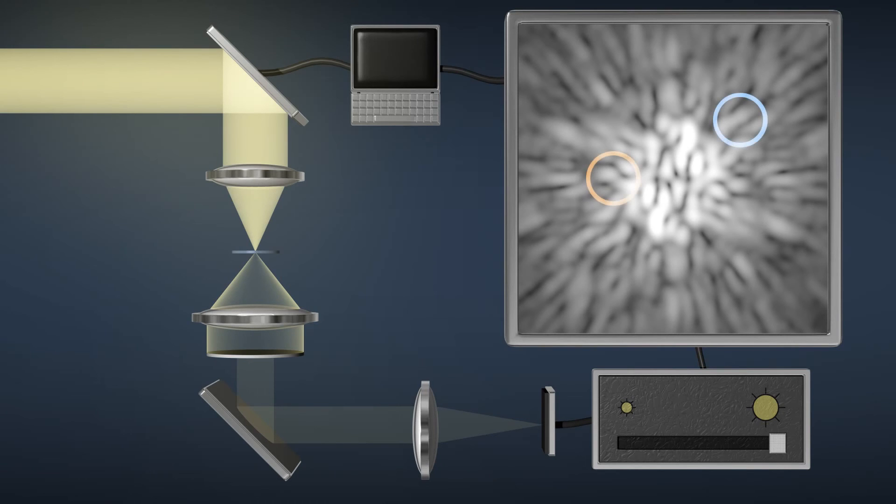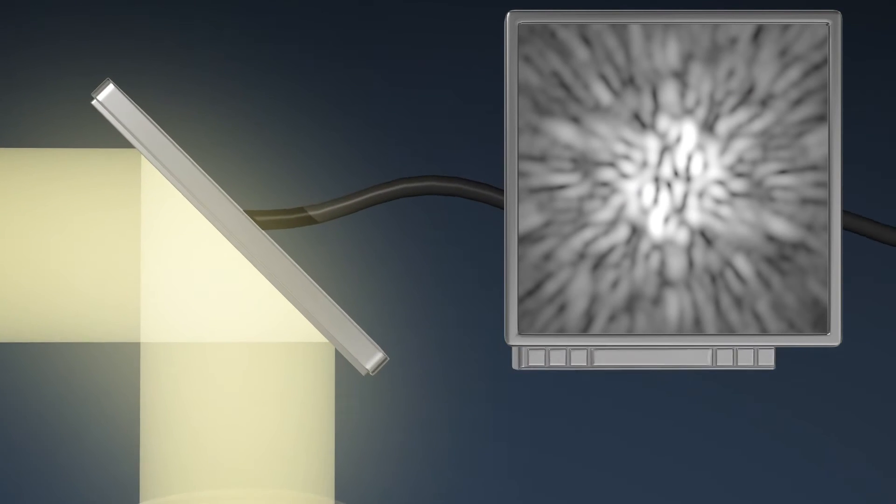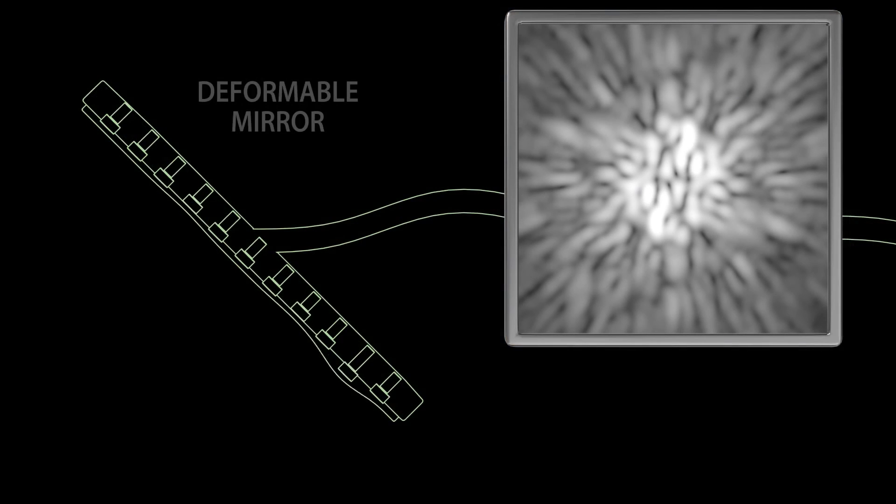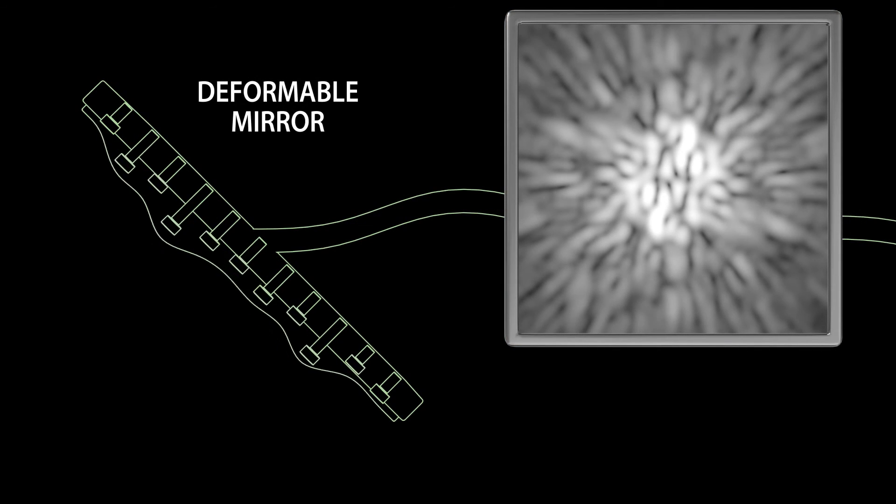So this takes us to the third and last element of the coronagraph, the removal of these scattered blobs. A special mirror is used with hundreds of tiny pistons behind it that can change its shape so as to correct the distortions in the light beam.